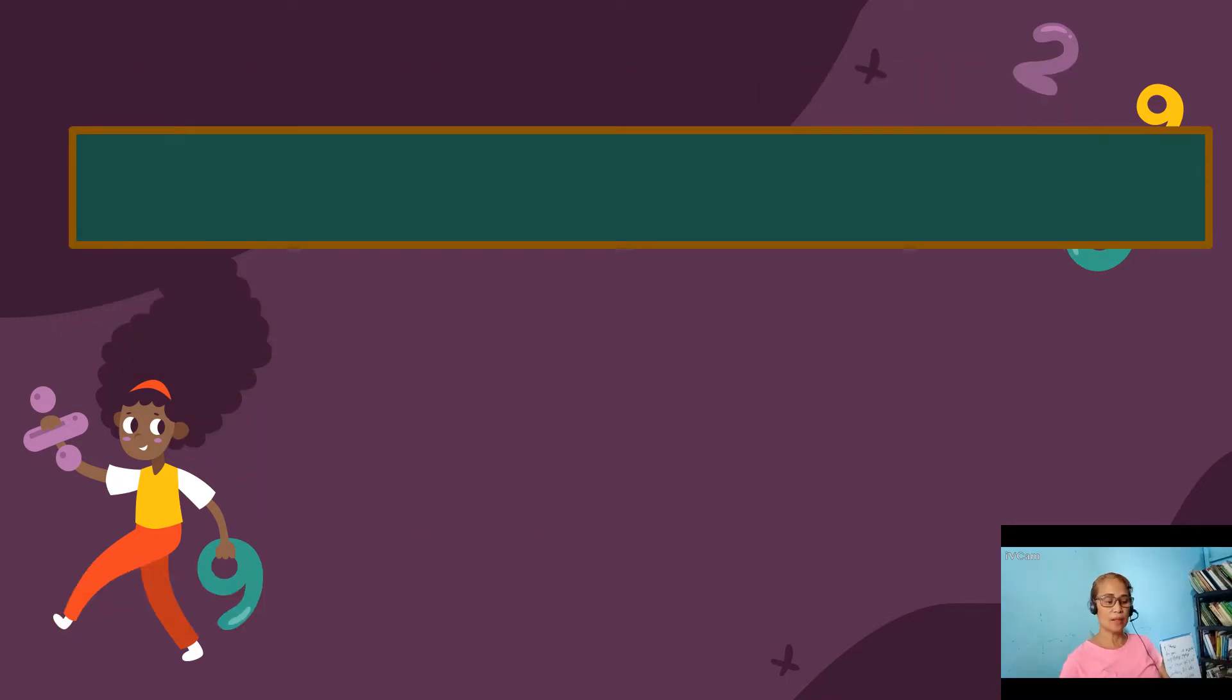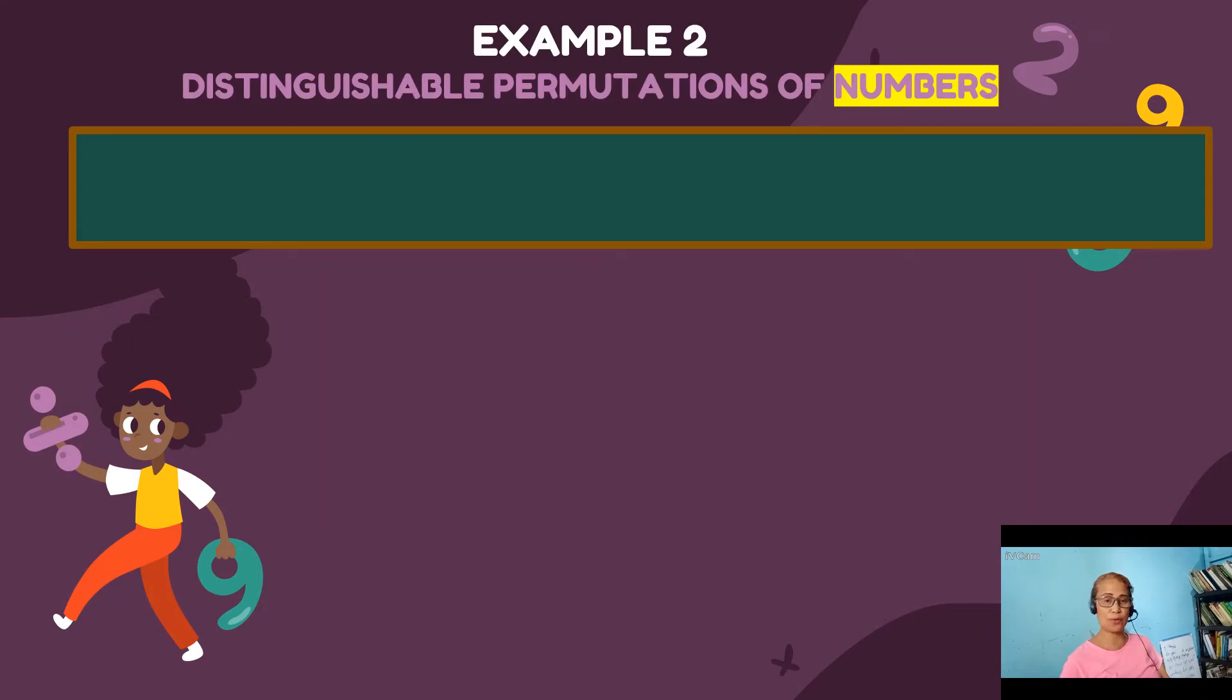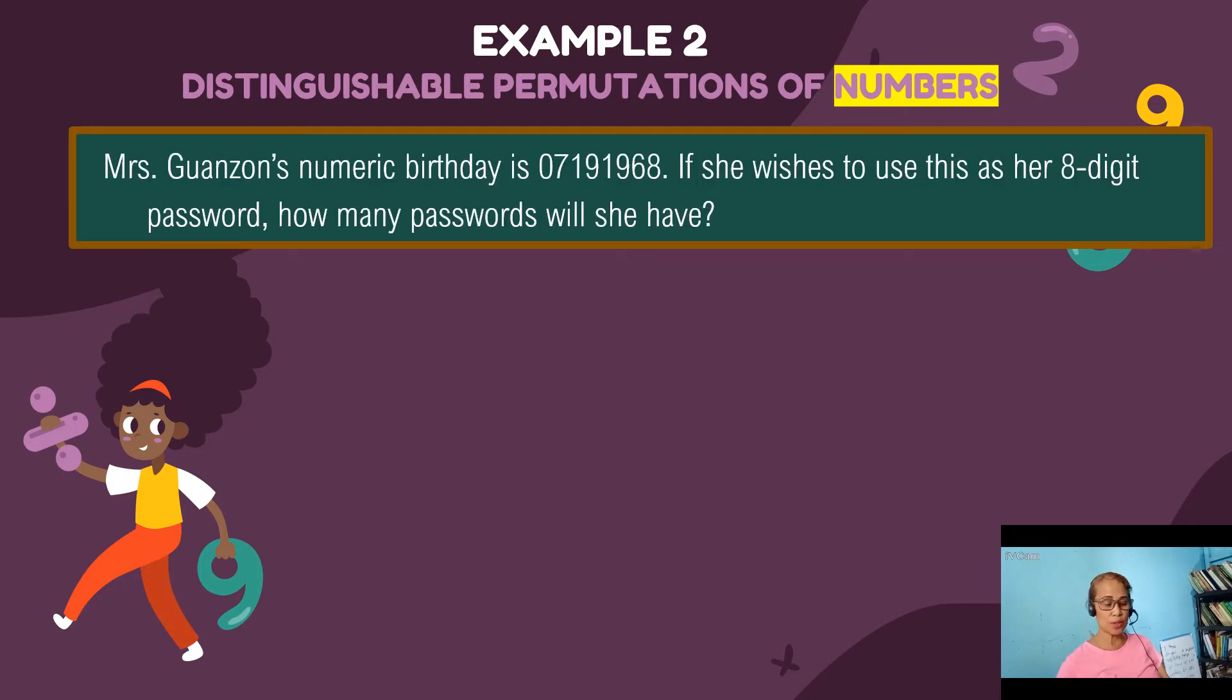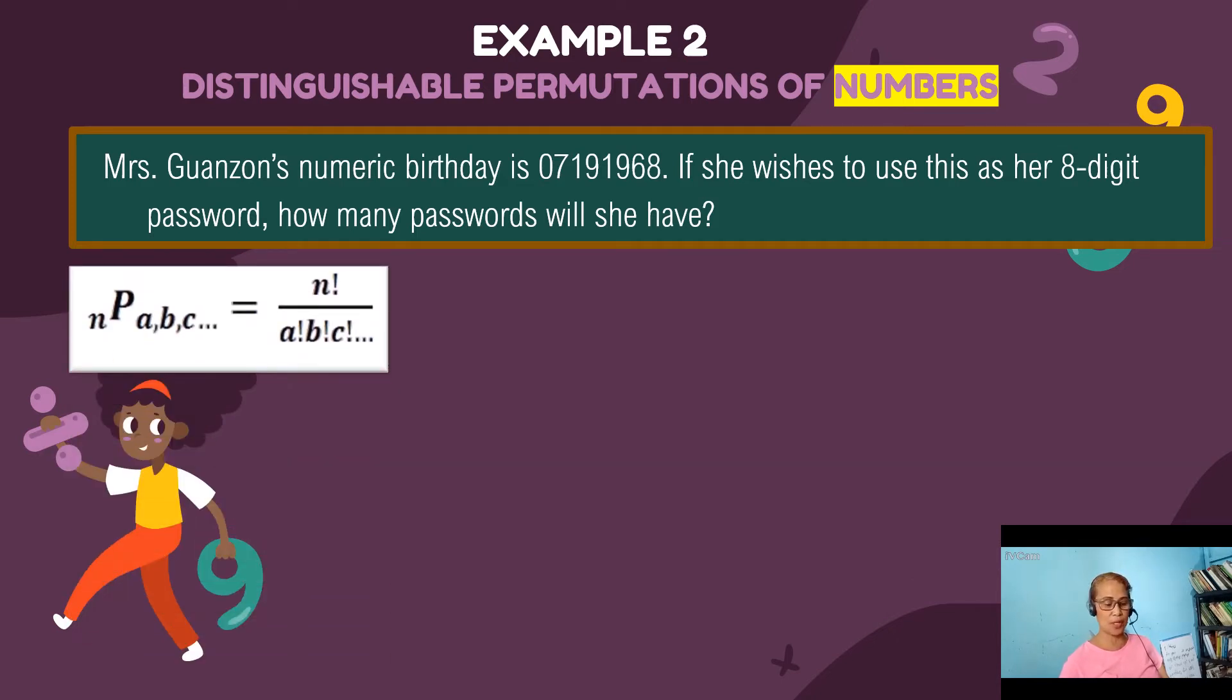Now in example two, I'm going to show you how to use distinguishable permutation formula in numbers. So Mrs. Bonzon's numeric birthday is 07191968. If she wants to use this as her eight-digit password, how many passwords will she have? So first, let's be guided by our formula. Let's count first the number of objects that we are supposed to rearrange.